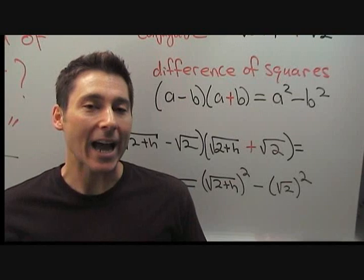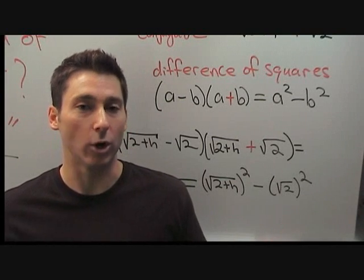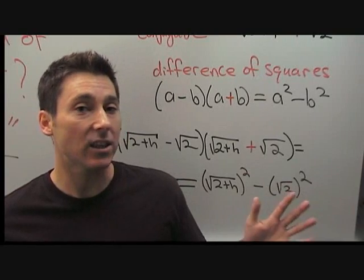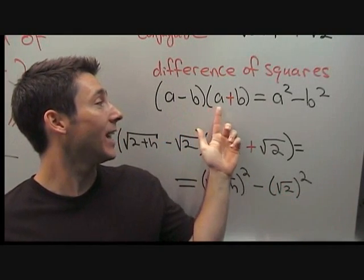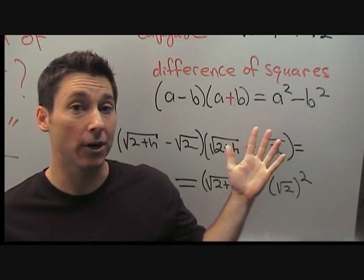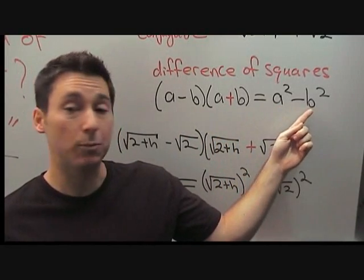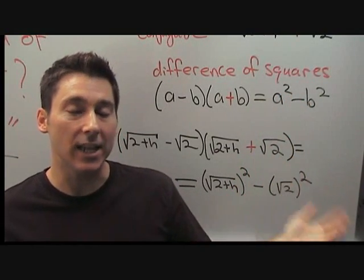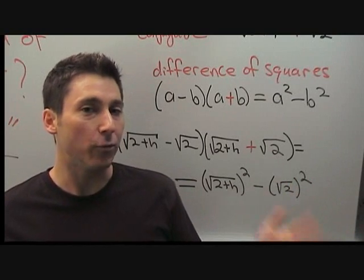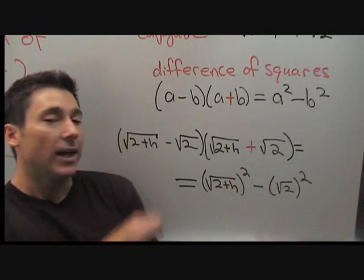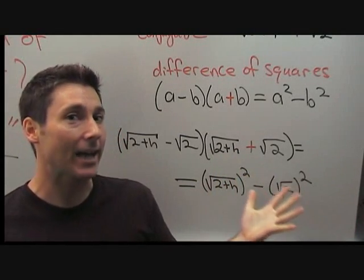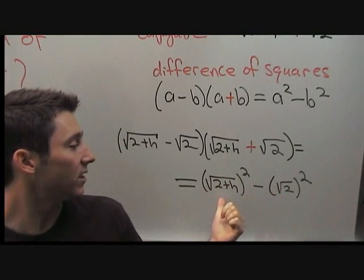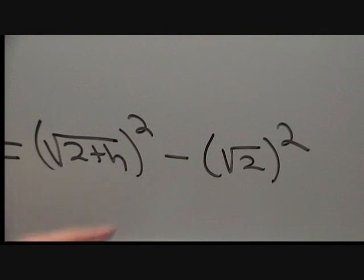In this case, we're actually going to use the difference of squares read in reverse. That is, if you take the two quantities a minus b and a plus b and multiply them together, you get a squared minus b squared. Notice the square is exactly what we need to get rid of a square root. For our problem, if we take the original numerator and multiply by the conjugate, we get this expression, where the squares will help remove the square roots.